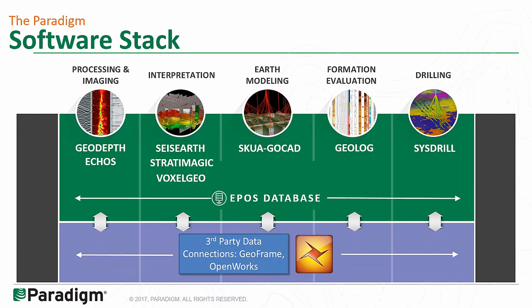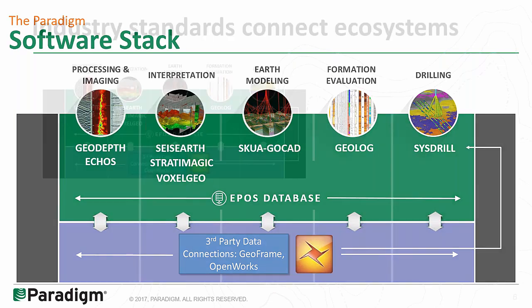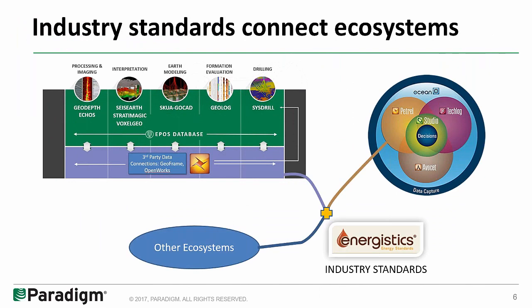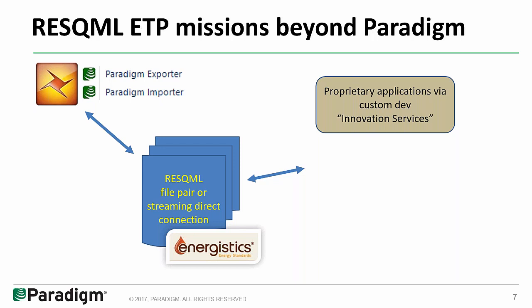For a number of years we've had third-party data connectors to GeoFrame and OpenWorks. But beyond those, we've also built a connector using the Energistics standards, connecting to Petrel using Energistics. Because it's an open standard, in principle it could be used to connect to anything else — a one-to-many or one-to-any connector. You could use Paradigm's Innovation Services or hire your own programmers and develop plugins for Petrel, or move data from Paradigm to Petrel or any other application using ResQML. Last year we showed the file-based ResQML transfer; this year we're going to show the streaming direct connection.